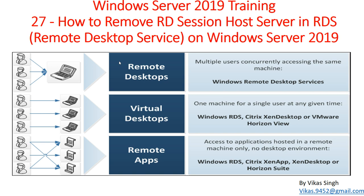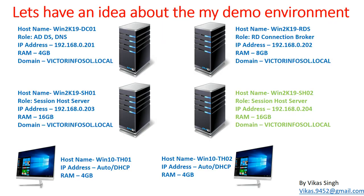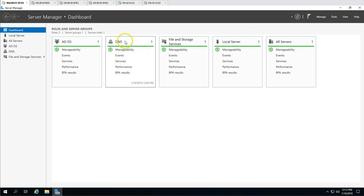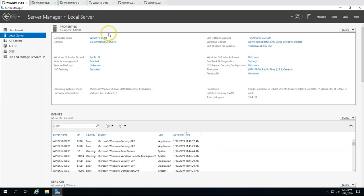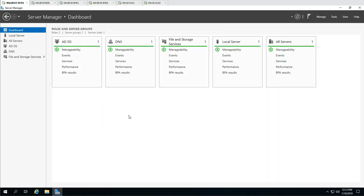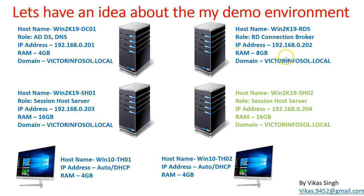Here is my domain environment which I am going to use in this demo. The first machine is Win2K19-DC01, which is my Active Directory server. You can see the Active Directory and DNS role is running on this machine. The domain is victim4sold.local, the domain name shown is victim4sold.com, and the IP address is 192.168.0.201. This is my domain controller and DNS server.